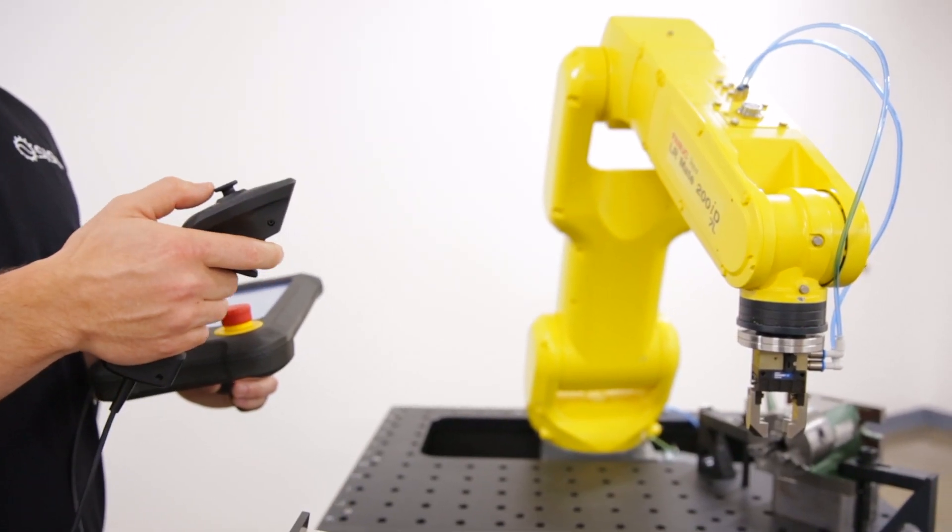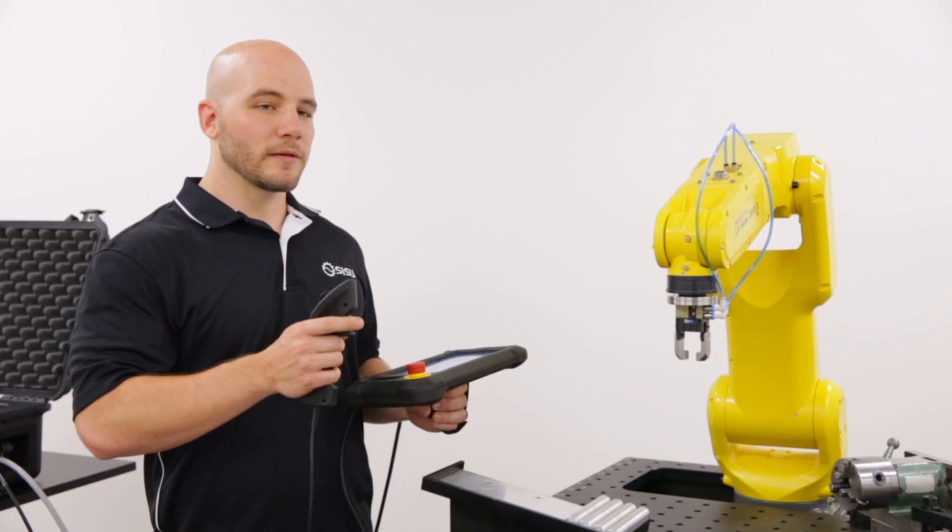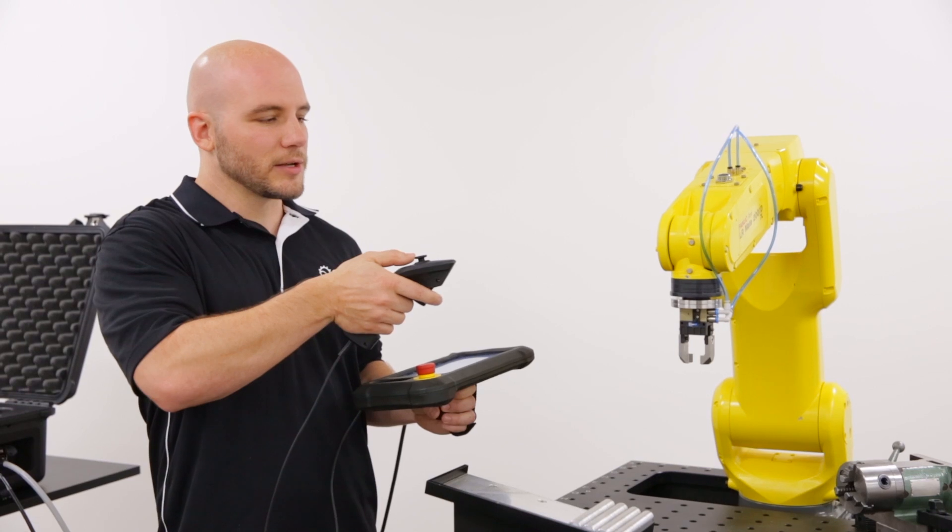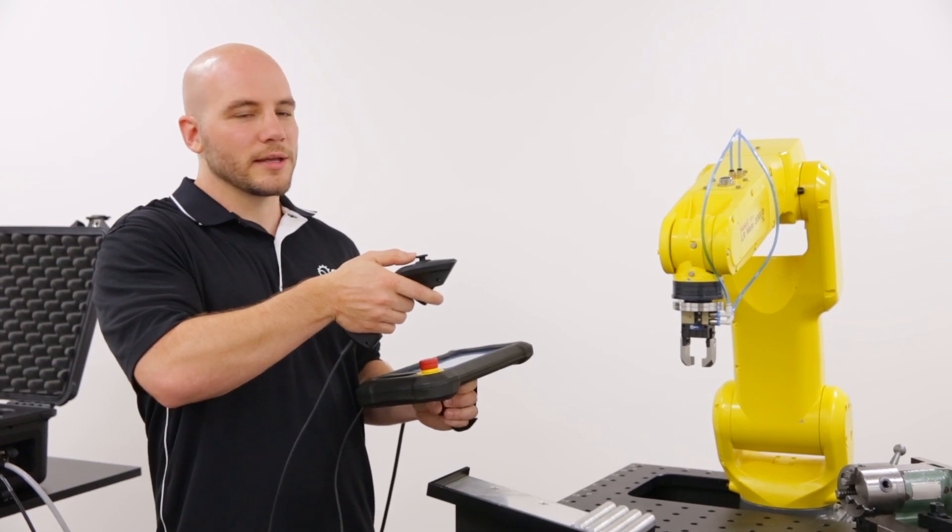The controller also has a joystick for fine adjustment. If I think of the trigger as grabbing the end effector, I can think of the joystick as nudging it. It works exactly the same way as the trigger.